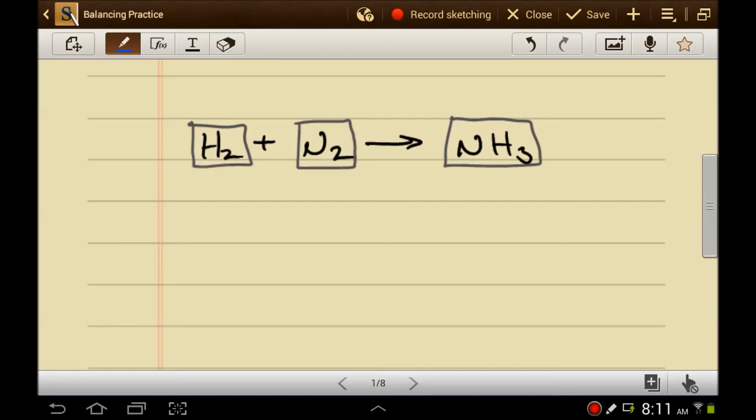So, we want to balance this reaction. There's 2 hydrogens on this side, there's 3 hydrogens on this side, there's 2 nitrogens on this side, there's 1 nitrogen on this side. So, how do we balance this? We have to use coefficients. So, we'll put a 2 there, that gives us 2 nitrogens.